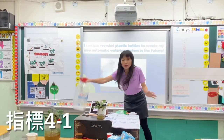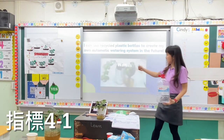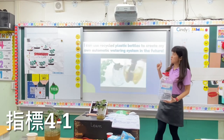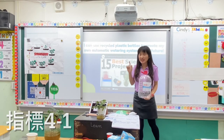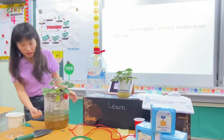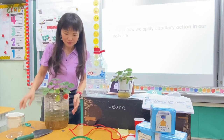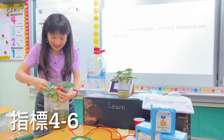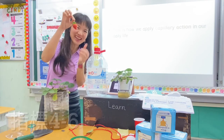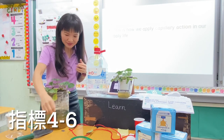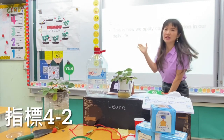You have the plastic bottle — you can cut it, 剪掉它. And then you can make your own automatic watering system — 自动灌溉系统. Then you can use the cotton string inside and make the water flow slowly, so you can successfully grow your own strawberry. This is how we apply capillary action in our daily lives.